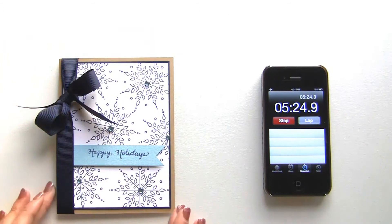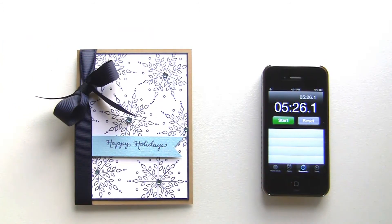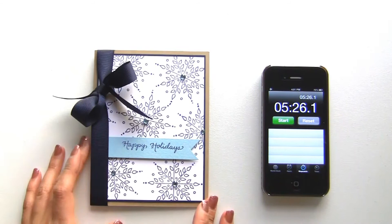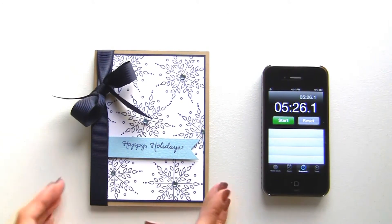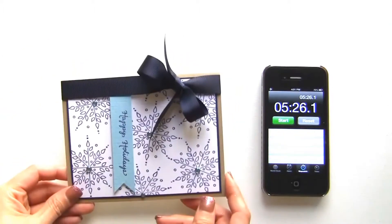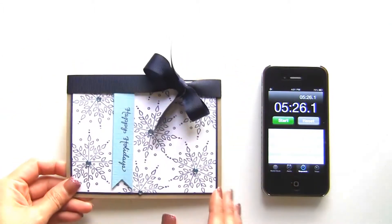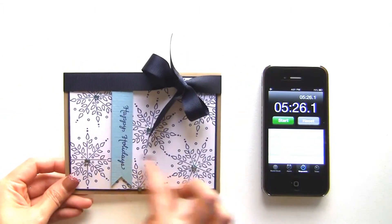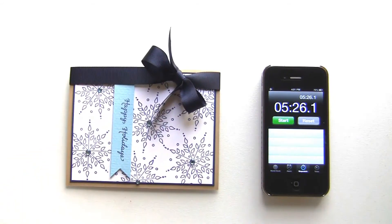Okay so we are finished five minutes and 26 seconds from start to finish on this card. So if you wanted to add a little bit of variation for this card you can actually rotate this. You would do the bow obviously a little bit differently and then you can do your sentiment going this way that it just adds a little bit of variation to your cards.